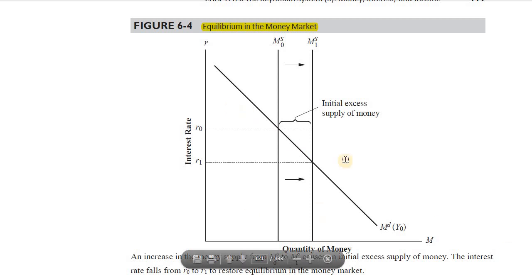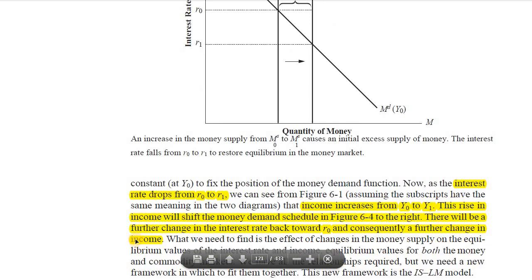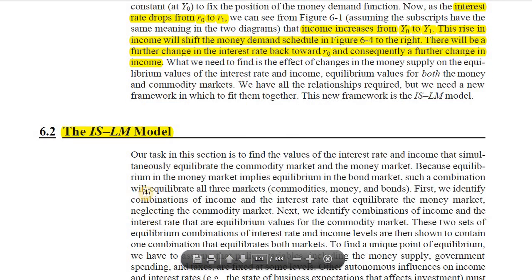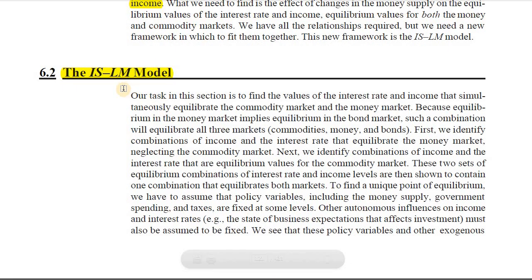This is a drawback of the Keynesian model studied up till now. Keynes analysed the money market in isolation — simply assuming money demand and money supply determine the rate of interest. But in the real economy these things are quite interdependent. This is the very reason we need to look at the IS-LM model, which gives us the rate of interest and the income that make the goods market as well as the money market simultaneously in equilibrium.